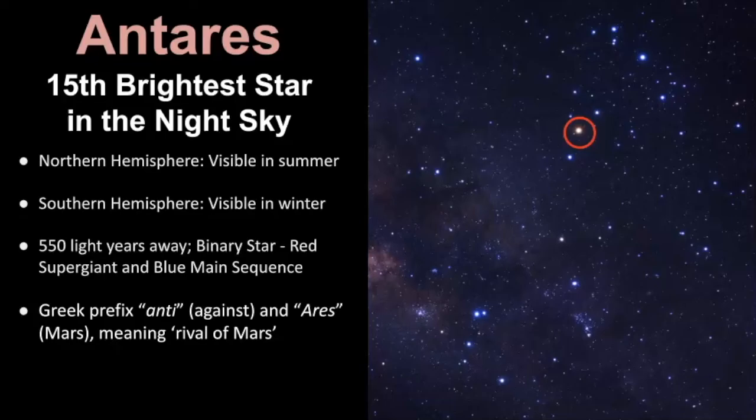First, we'll get a broad overview of the star Antares. It's the 15th brightest star in the night sky, and it's easily visible from both the northern and southern hemisphere. In the northern hemisphere, we will see it in our summer months. But if you live in the southern hemisphere, that's during the wintertime. Remember, the seasons are opposite.